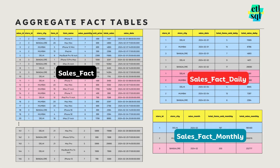Let's see a simple example. I have a store sales fact table with data for three stores in Mumbai, Bangalore, and Delhi. The data is at the transaction level — whenever a transaction happens, an entry is made into this fact table. I can also create a sales_fact_daily table: this aggregated fact table will store the same information but aggregated at the daily level, so for one day and one store there will be just one entry.